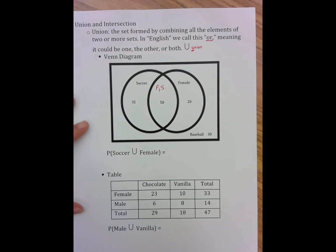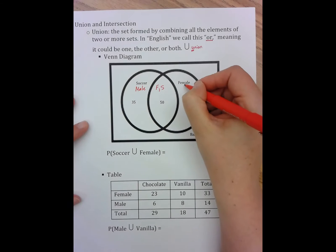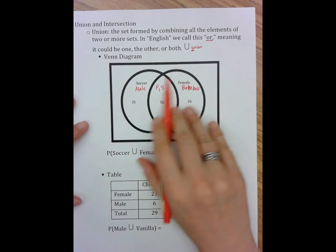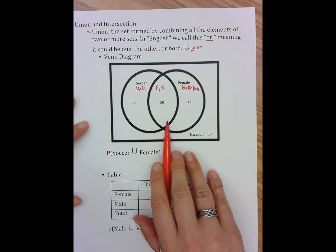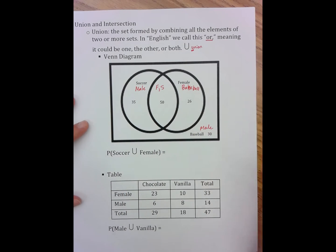that must mean that this is female soccer, which means that this must be soccer male, which means if this is female but not soccer, it must be baseball. Which means that if this is all the females and this is the males who play soccer, this must be the males who play baseball.